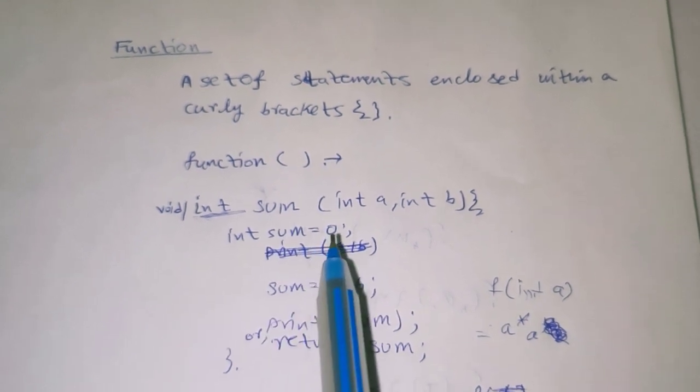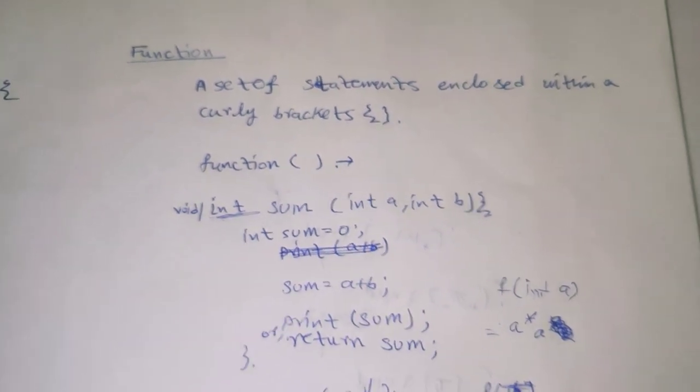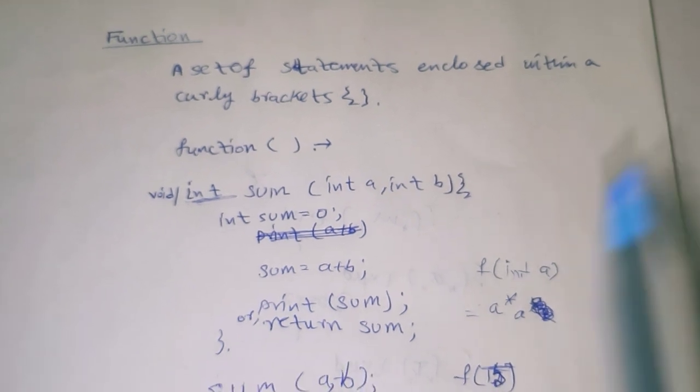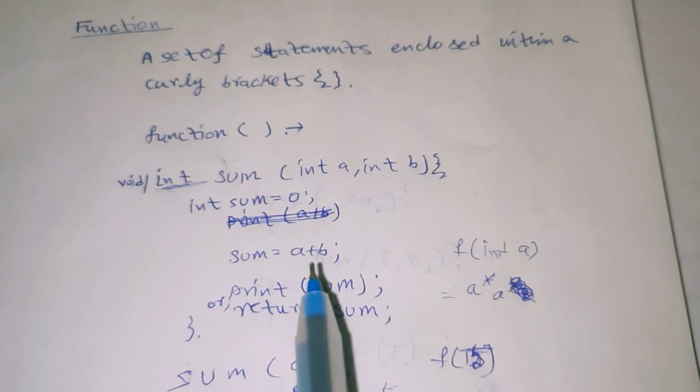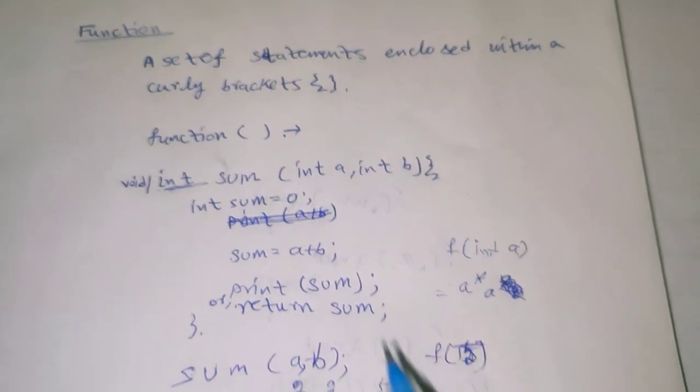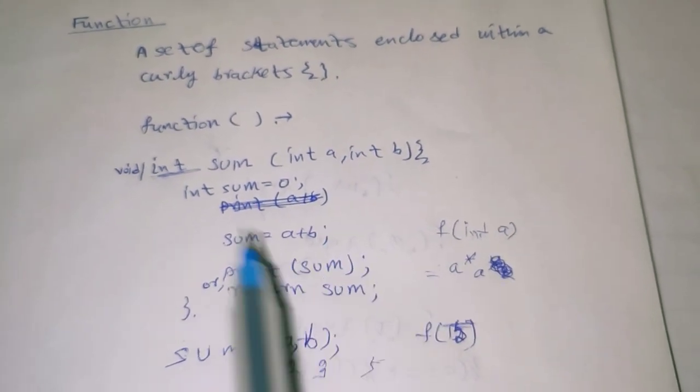This variable is initialized with zero, otherwise the sum will get garbage value sometimes. So here we are using sum equals a plus b to sum the two numbers, and printing the sum.